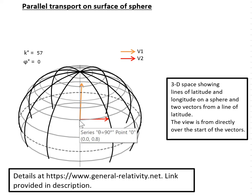And so we've got one vector which is pretty much parallel to the line of latitude and the other which is at right angles to the line of latitude.